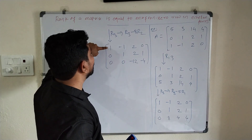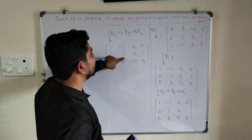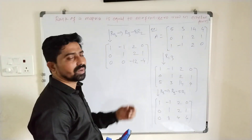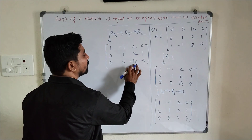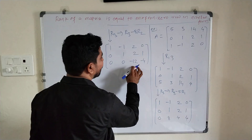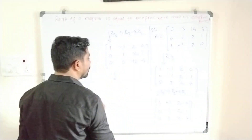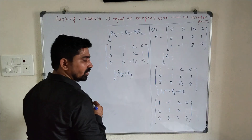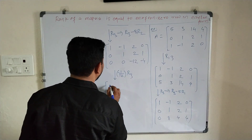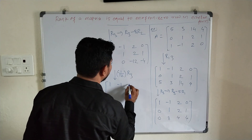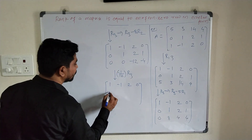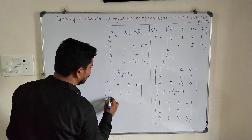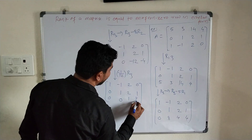Now the first non-zero entry of R1 is 1 and of R2 is 1. The first non-zero entry of R3 is −12. I want to make −12 equal to 1, so I apply the elementary row operation: multiply R3 by −1/12. After this operation, the matrix becomes: Row 1: 1, -1, 2, 0. Row 2: 0, 1, 2, 1. Row 3: 0, 0, 1, 1/3.